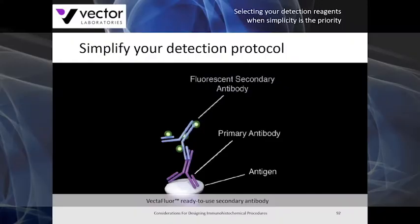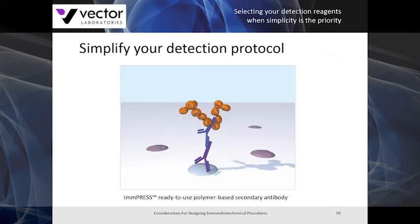Here are a couple of examples to simplify your assay construction. The first is to use a Vectiflor ready-to-use secondary antibody. After you apply your primary antibody, you have a single ready-to-use step directly from the bottle — a fluorescently labeled secondary antibody for 30 minutes. When rinsed off, you apply mounting media and visualize under the fluorescent scope. For a chromogenic assay, you can apply a similar one-step protocol with our Impress polymer-based system: after your primary antibody step, add the Impress polymer for 30 minutes, followed by your substrate, then mount and visualize.